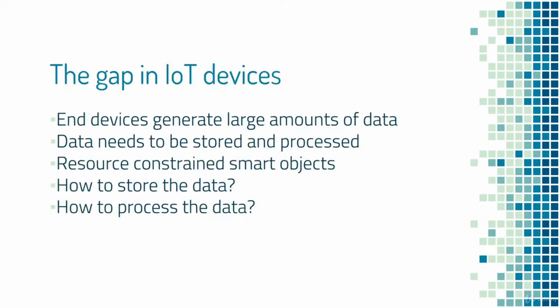Let's look at the gap in the IoT device ecosystem and what can be done to fill it. End devices are usually data producers in the form of sensors, data consumers in the form of actuators, or both. The data produced is large and thus overwhelming for the end device to store and process, given that these devices are resource-constrained with RAM ranging from a few kilobytes to a few megabytes.